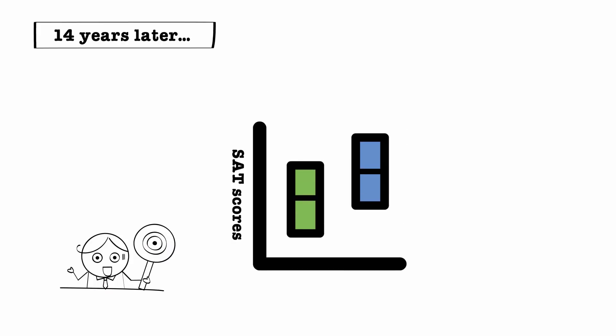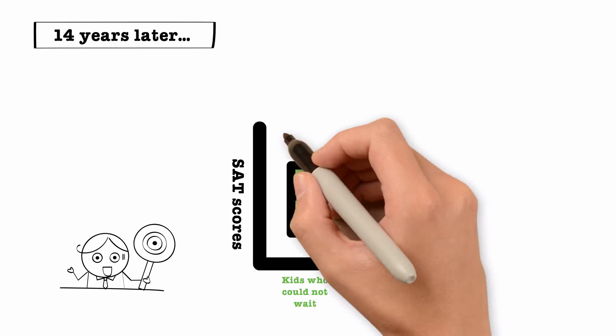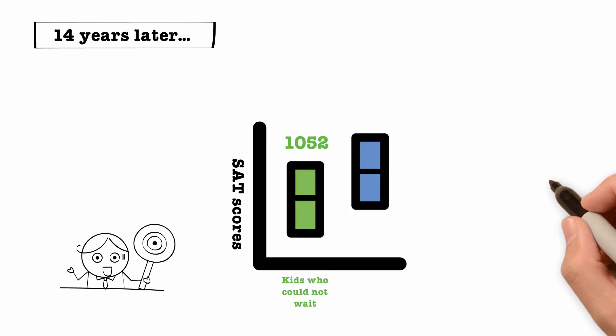14 years later, the kids who couldn't wait for their marshmallows - what were their SAT scores? The average SAT scores of kids who couldn't wait for the second marshmallow, who just ate the first marshmallow, their average score was 1052.